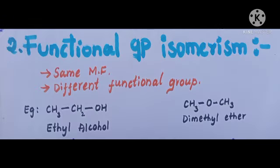Functional group isomerism: in this, compounds have the same molecular formula but different functional group. For example, ethyl alcohol and dimethyl ether — the functional groups are different but the molecular formula is the same.